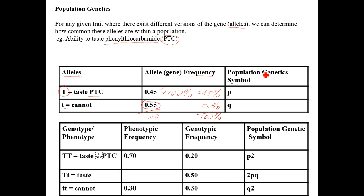We're going to do a lot of calculations using specific population genetic symbols. A lowercase p is the symbol used to represent the dominant allele frequency, and a lowercase q represents the recessive allele frequency. So when doing calculations, p corresponds to the capital T allele, and q corresponds to the lowercase t allele.